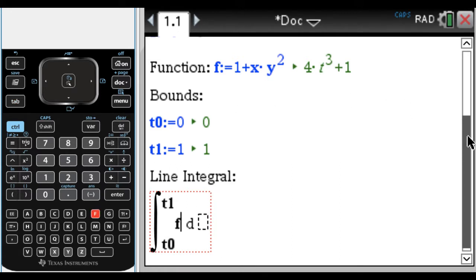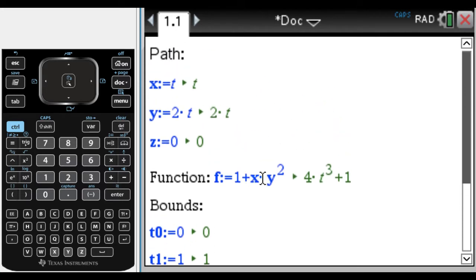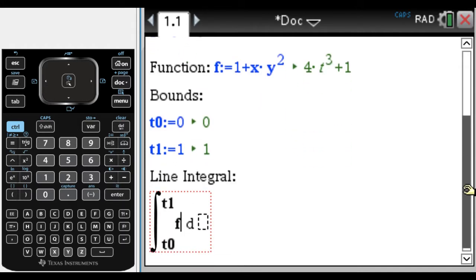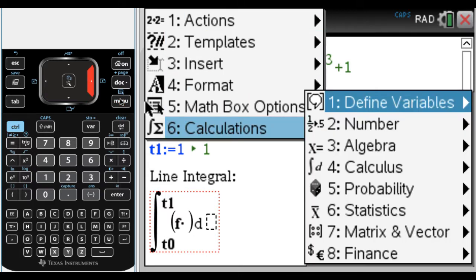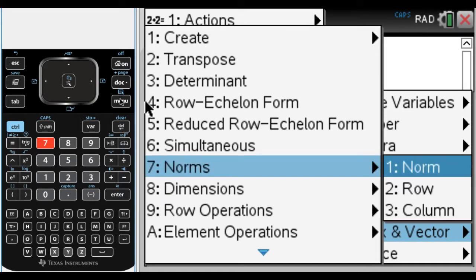And then what we do is F. You can see what happened with the math boxes is when I typed in one plus X times Y squared, the math box looked up what X and Y were and substituted them in. So F is already in terms of T, which is what we need to do. Times, we need to get the norm of R prime. So norm. You can actually access the calculator functions. They're in option six here.